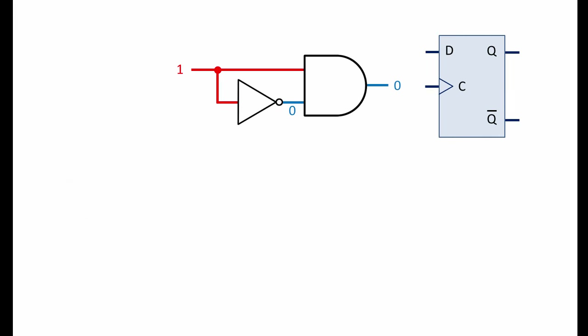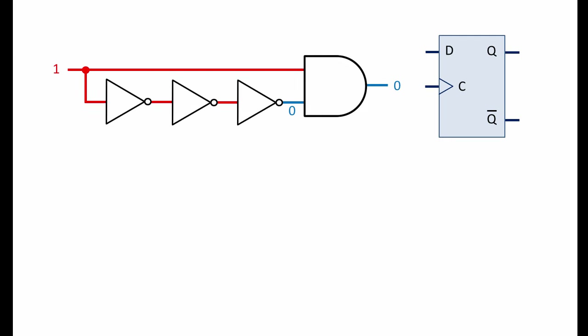We can alter the behaviour of our clocked D-Latch with some further modifications. One of the problems with using this particular edge detection device is that the pulse it produces may not be wide enough to open the latch and let data in. This depends on the operating characteristics of the electronic components and the specific voltage levels being applied. We can increase the delay of our edge detector, and therefore the pulse width, by adding more NOT gates. Of course, we need to make sure there's an odd number of NOT gates to invert the signal.